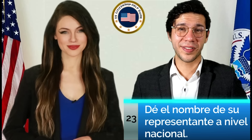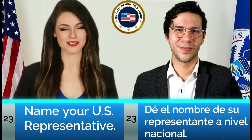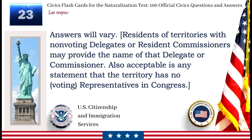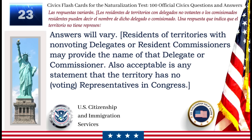De el nombre de su representante a nivel nacional. Name your U.S. representative. Las respuestas variarán. Los residentes de territorios con delegados no votantes o los comisionados residentes pueden decir el nombre de dicho delegado o comisionado. Answers will vary. Residents of territories with non-voting delegates or resident commissioners may provide the name of that delegate or commissioner. Also acceptable is any statement that the territory has no voting representatives in Congress.